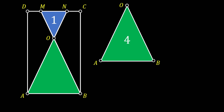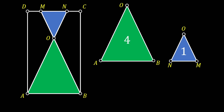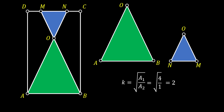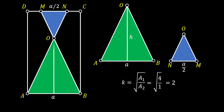Now we can isolate them and use the rule of similarity. We know that the factor of similarity K is equal to the square root of the relation between the areas of those two triangles. If we substitute our values and calculate, we get that this factor is equal to 2. This means that our bigger triangle ABO has two times bigger sides than our smaller triangle NMO. So if we label the base of our big triangle as A, the base of our smaller triangle must be A over 2. The same applies for the height: if the height of the bigger triangle is H, the height of our smaller triangle must be H over 2.